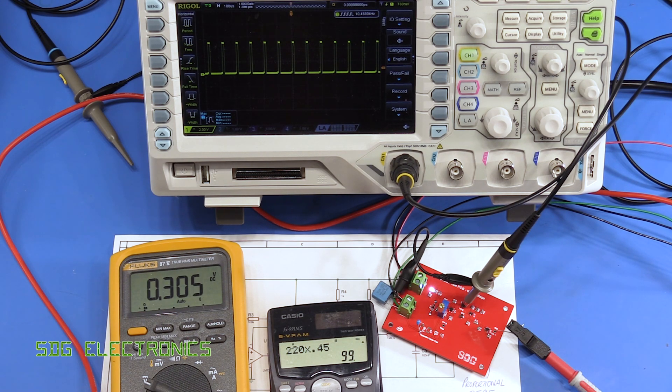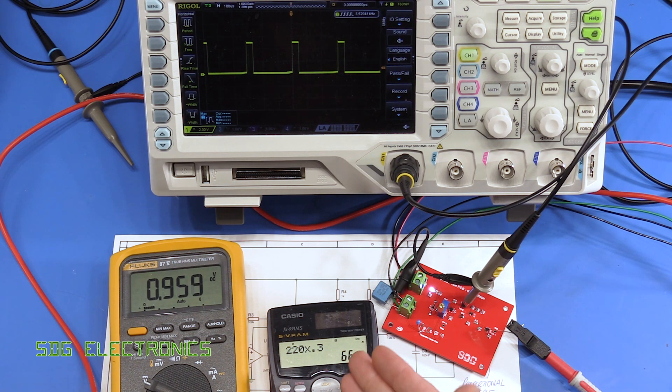We're at 0.3, so 220 times 0.3, our 220 nanofarad capacitor is now only 66 nanofarads. So you can see that if you were to use this in your circuit and you were relying on that value specifically, then it wouldn't be behaving exactly as you intended.